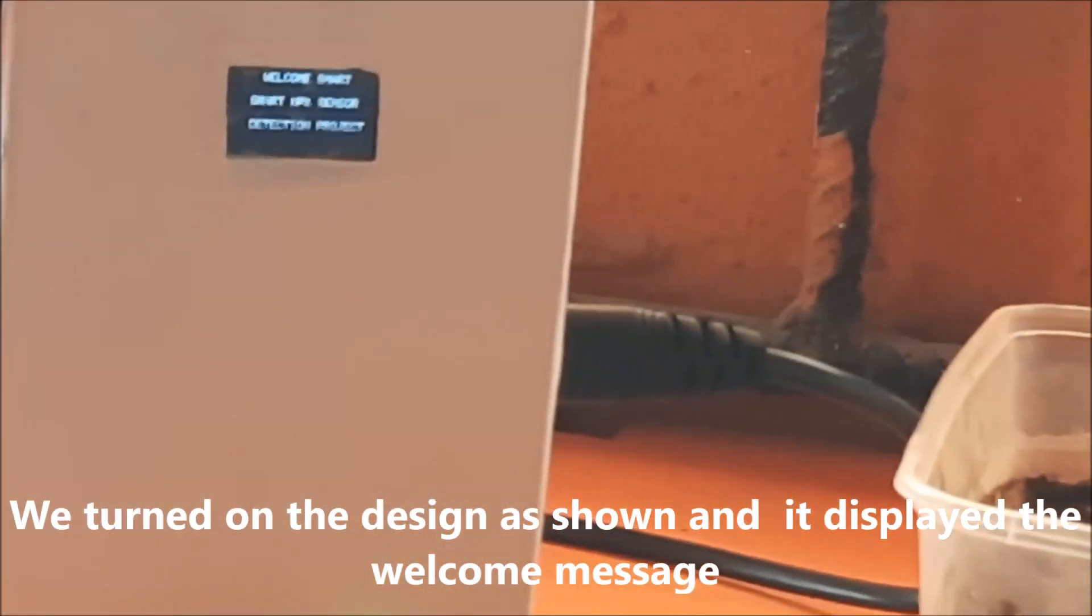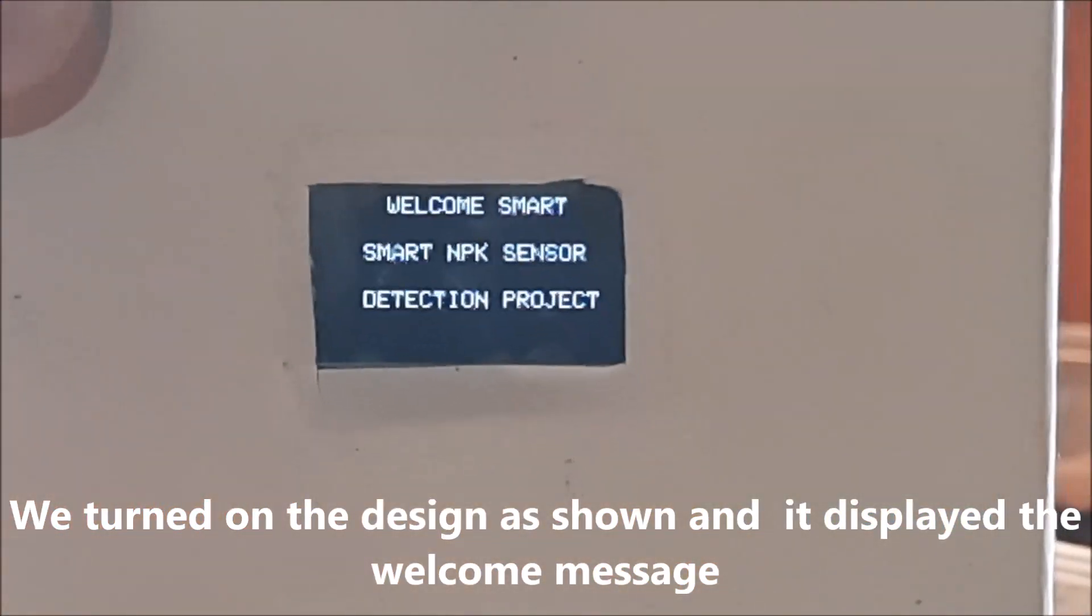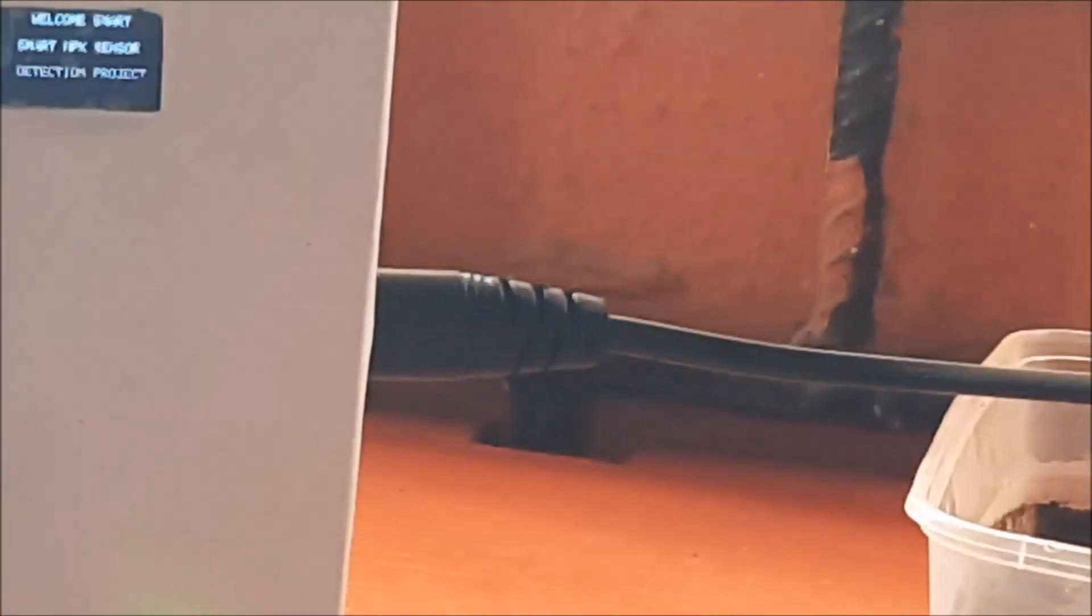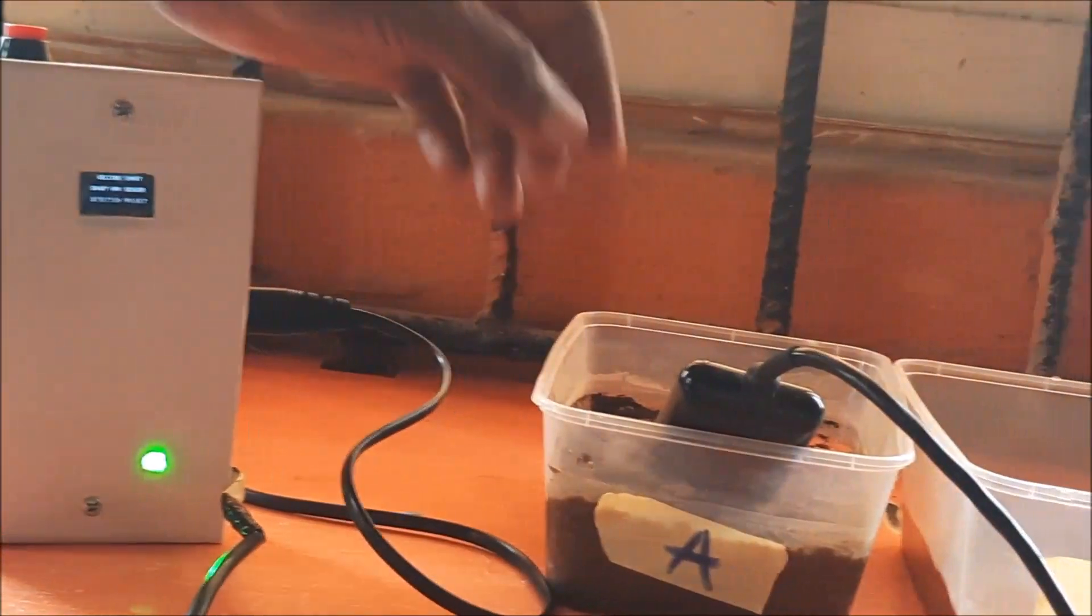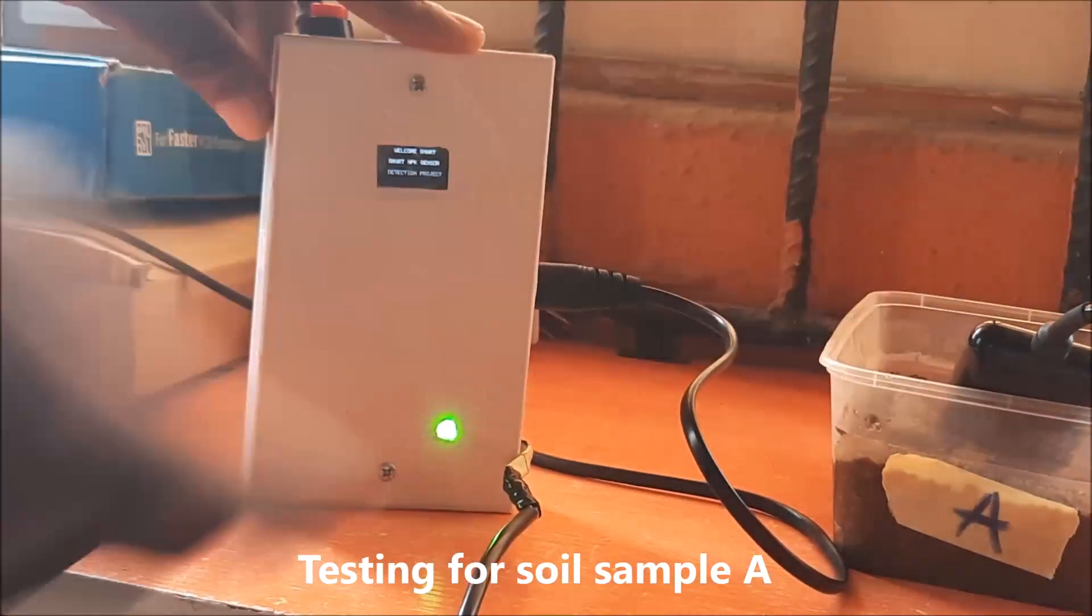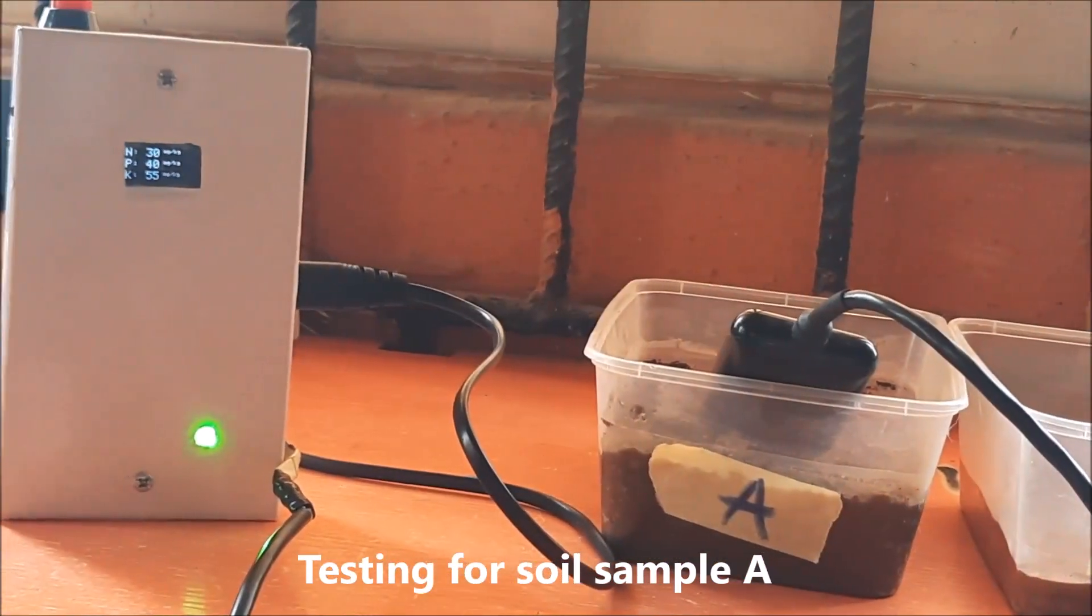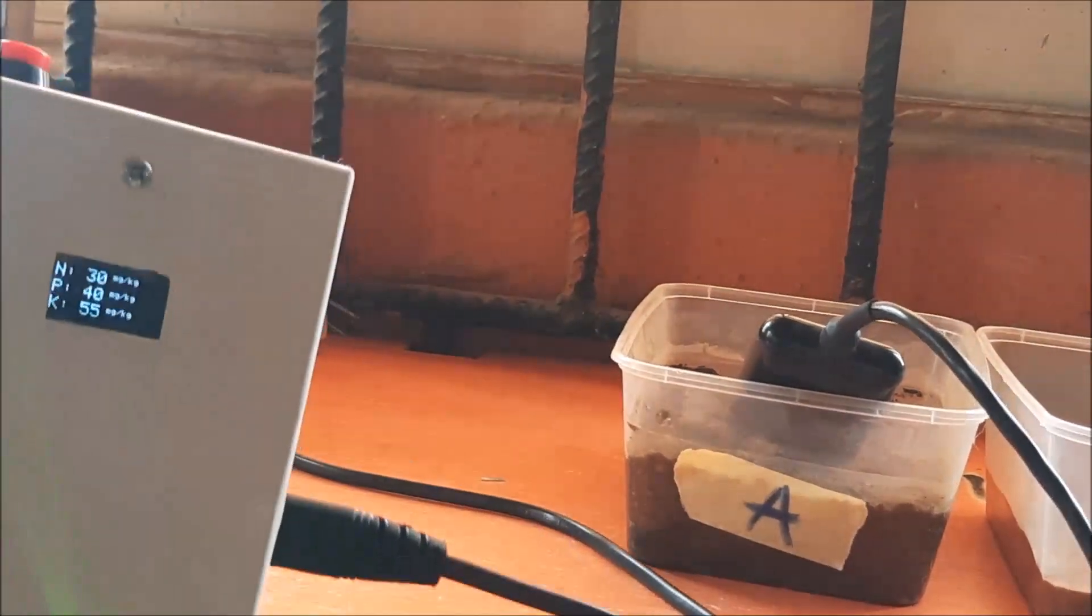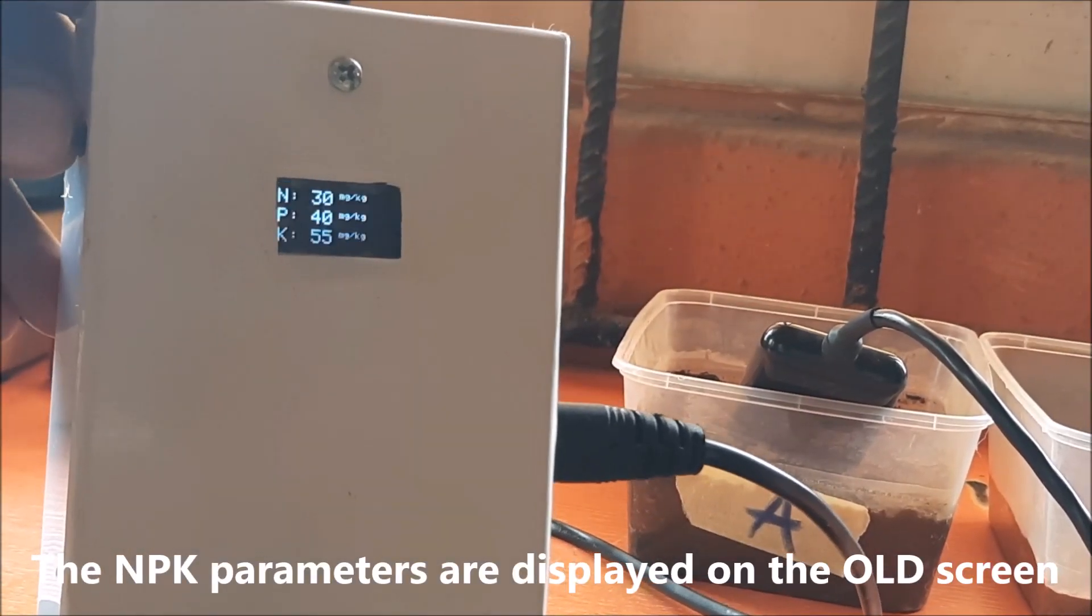We turned on the design as shown and it displayed the welcome message. The first test is carried out on soil sample A. This displayed the nitrogen, phosphorus, and potassium levels that were present in the soil on the OLED screen while remotely sending the same information through the Arduino Nano microcontroller to the ESP-01 microcontroller to send to Blink cloud.